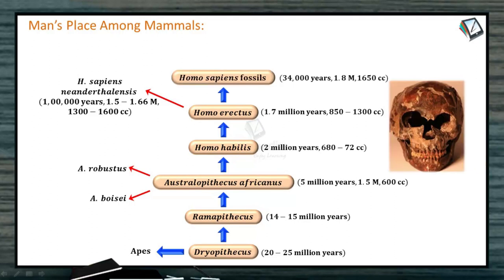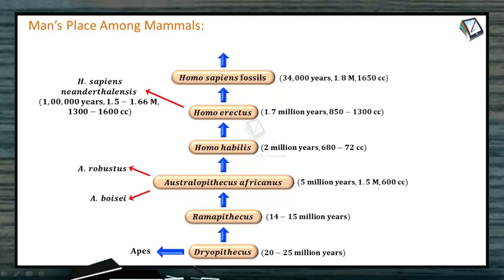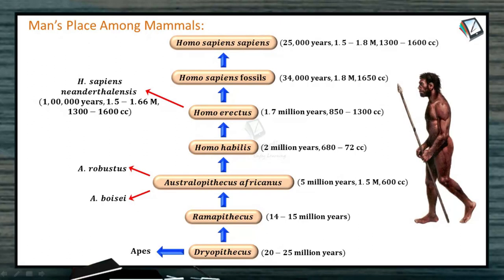Then you have Homo sapiens fossilis. This is based on skull records only — there is no facial reconstruction, only the skull was found. It is referred to as Homo sapiens fossilis. From that came Homo sapiens fossilis, leading to Homo sapiens sapiens.